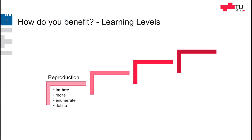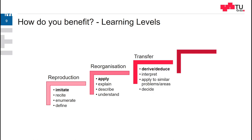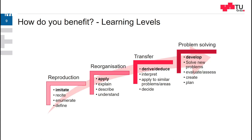How you benefit from this is by reaching higher learning levels. The first learning level is just imitation — reproducing what we tell you, learning by heart — and that is not what we intend. We want to bring you to higher learning levels: to apply what you have learned, to reorganize, explain, describe, and understand. We want to bring you to transfer — interpreting learning and applying it to new problems, developing your own solutions.